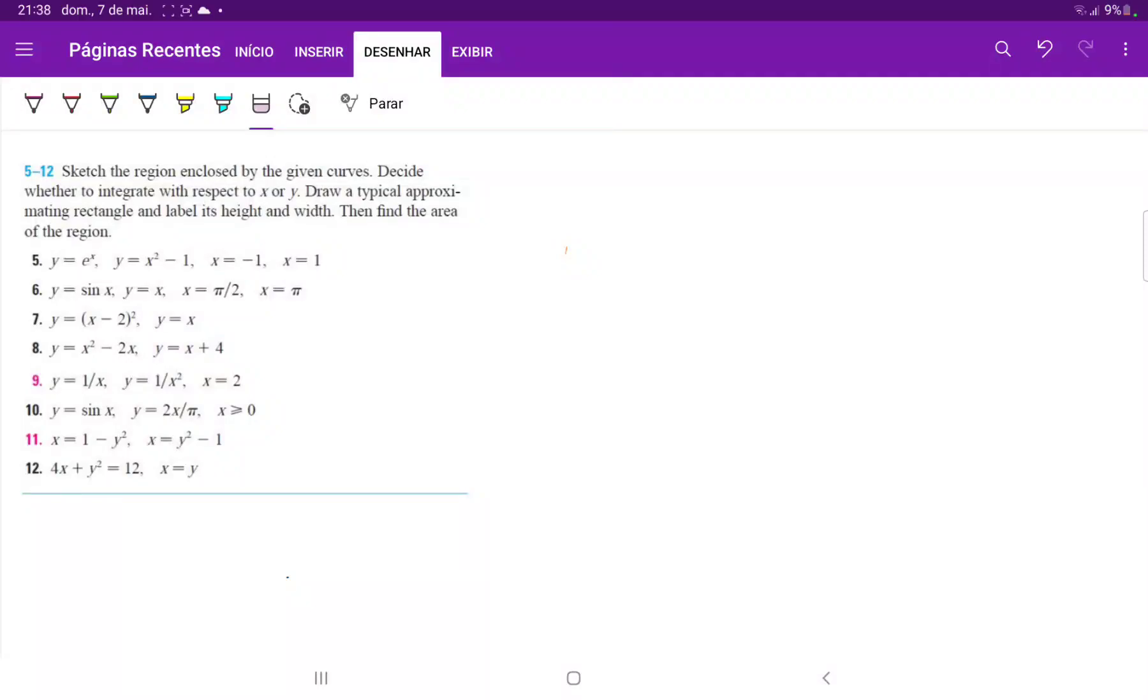So for number seven we want to draw these curves and see the area that's enclosed between them and then integrate it. So let's begin by drawing it out.